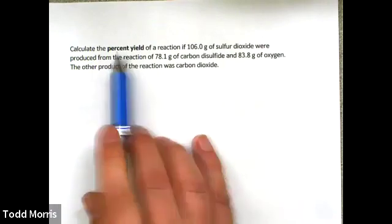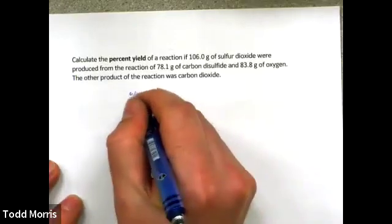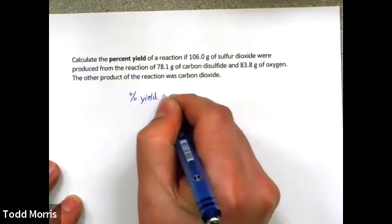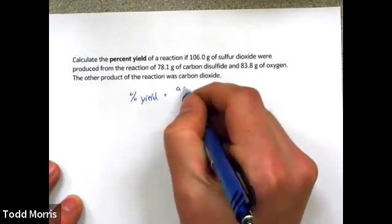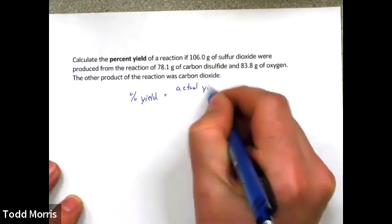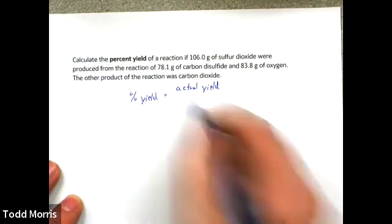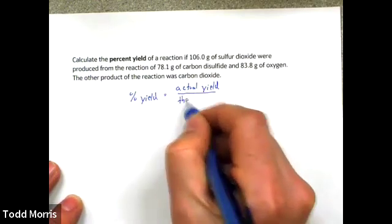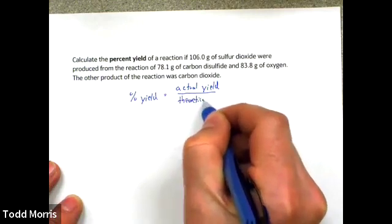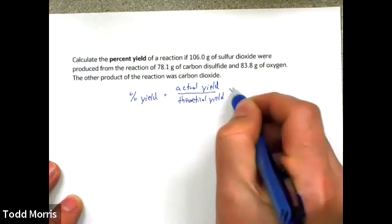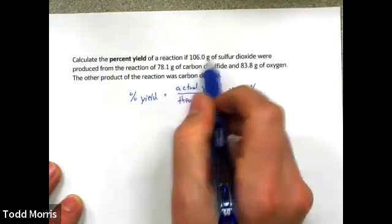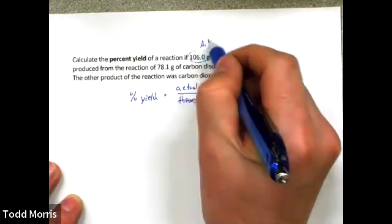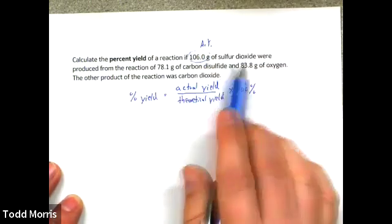We begin with: what is percent yield? Percent yield is a way of quantifying how efficient our reaction was. It is simply the ratio of the actual yield of a product — how much we actually produced experimentally — compared to our theoretical yield, how much we should have been able to produce based upon the amounts of reactants, as a ratio times 100%. We're given the actual yield: 106.0 grams of sulfur dioxide.